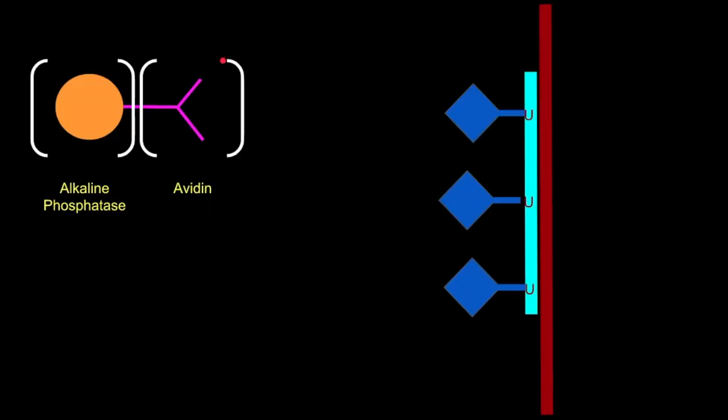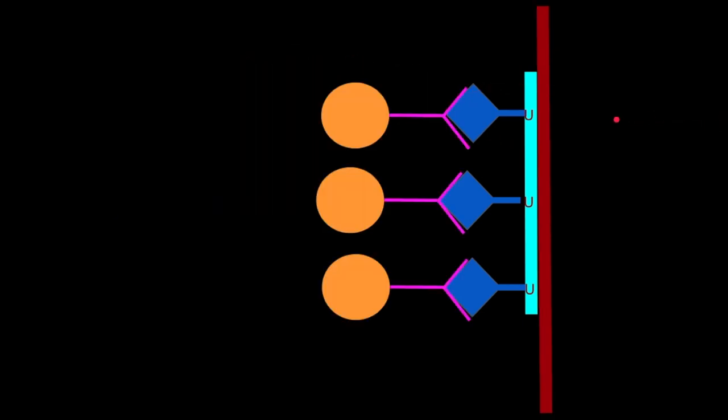Next, we add an alkaline phosphatase, but this one has an avidin fused to it. This is important because the avidin has a strong affinity for biotin. After allowing time for binding, we wash to remove extra avidin phosphatase.